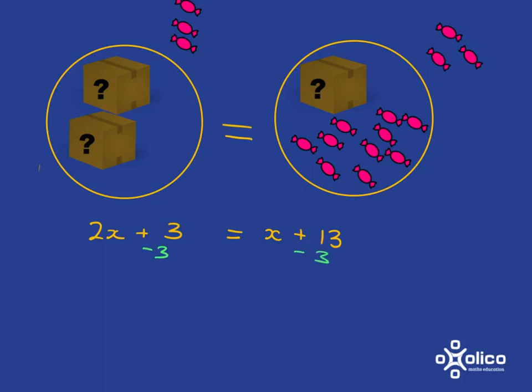In terms of the equation, that is what I have done. We still have exactly the same number of sweets on each side. In terms of my equation, what I have now is that 2x is equal to x plus 10.